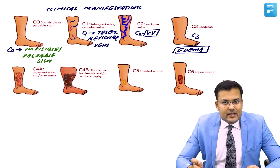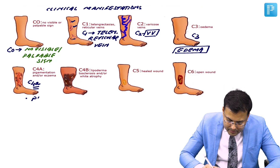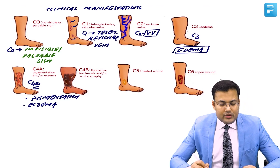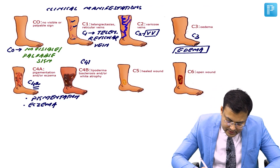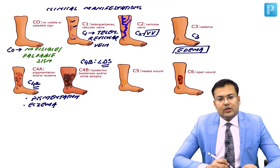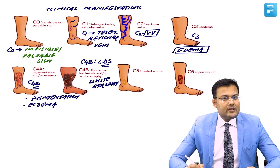C4 is further divided into C4A and C4B. C4A includes pigmentation — that is hyperpigmentation — and eczema. C4B, which was the question in INICET, includes lipodermatosclerosis with or without white atrophy.